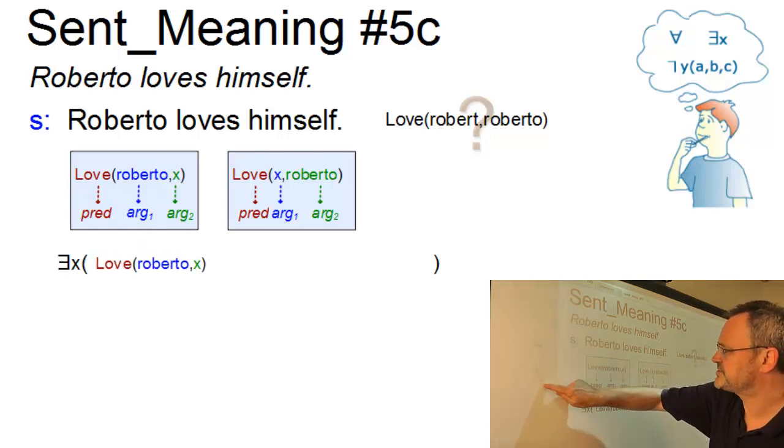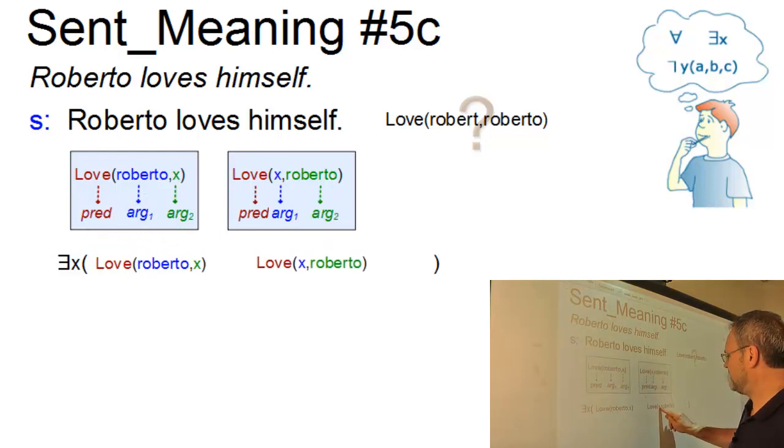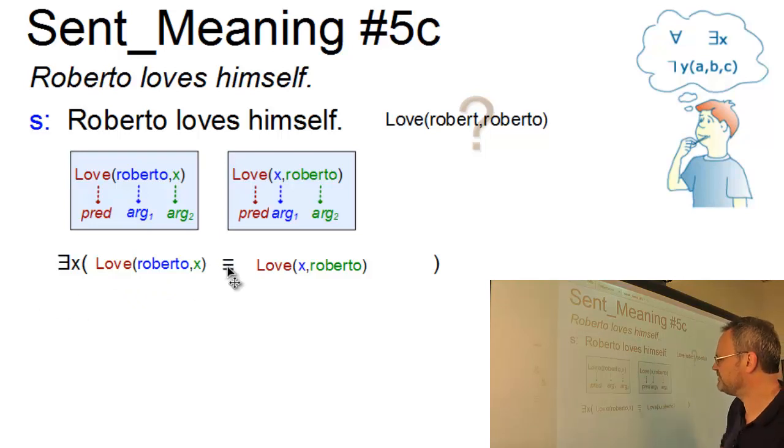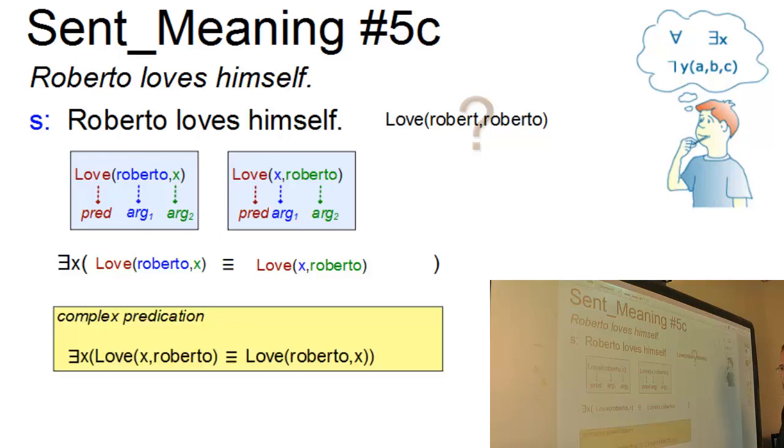And the formula can now be set up like this. Love, Roberto, x and love, x, Roberto. The formula itself can now be set up as an equivalent relationship, equivalence relationship, and it can be read as follows. There is at least one element x for which it holds. If and only if x loves Roberto, then Roberto also loves x. And this is an explicit realization of reflexivity.